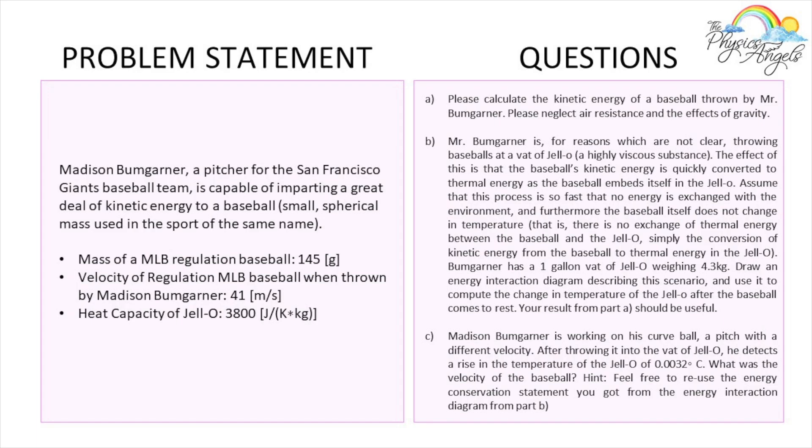So this is the problem we're going to be working on today. This is a baseball problem. Part A just asks to find the kinetic energy. They're giving you the mass, so that should be easy enough. The baseball player throws the baseball at 41 meters per second.